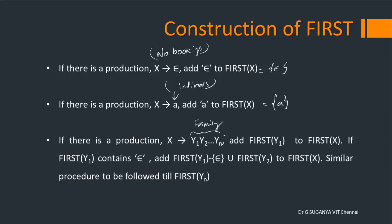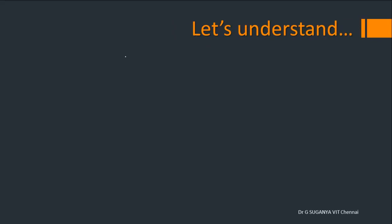When it is a family, whoever has already decided to come in order will be treated first. You have to add FIRST of Y1. If there is a production X gives α1 α2 up to αn, you can expand using α1. If α1 is a terminal, we stop with that.